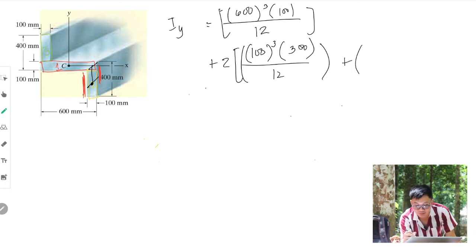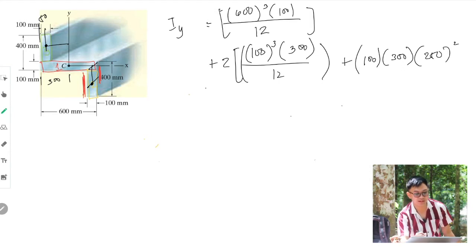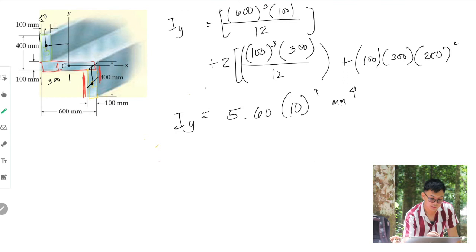Plus the area of 100 times 300 times the distance from the center of this one to this one. The distance is 300, and this is 50. So 300 minus 50, that is 250 squared. Therefore, we will have a value of Iy as 5.60 times 10 to the 9 millimeters to the fourth power. That's how you solve moment of inertia for composite bodies.